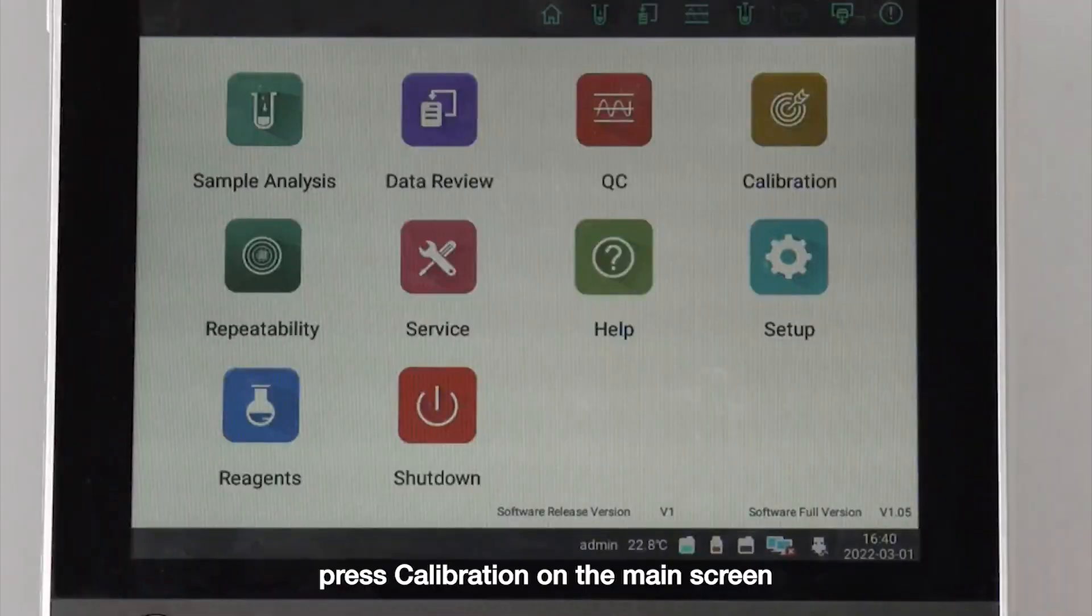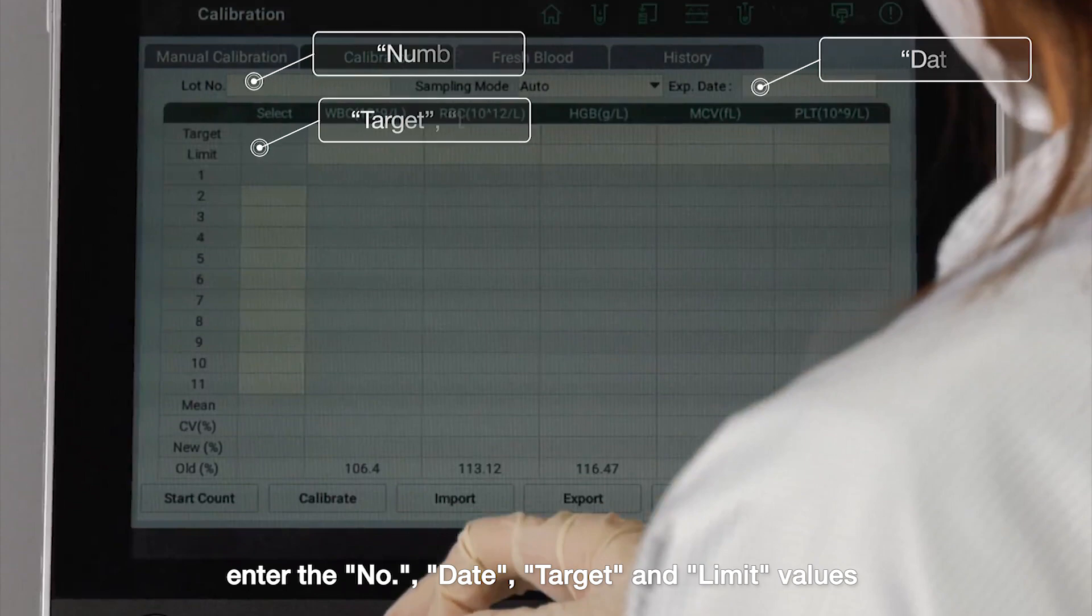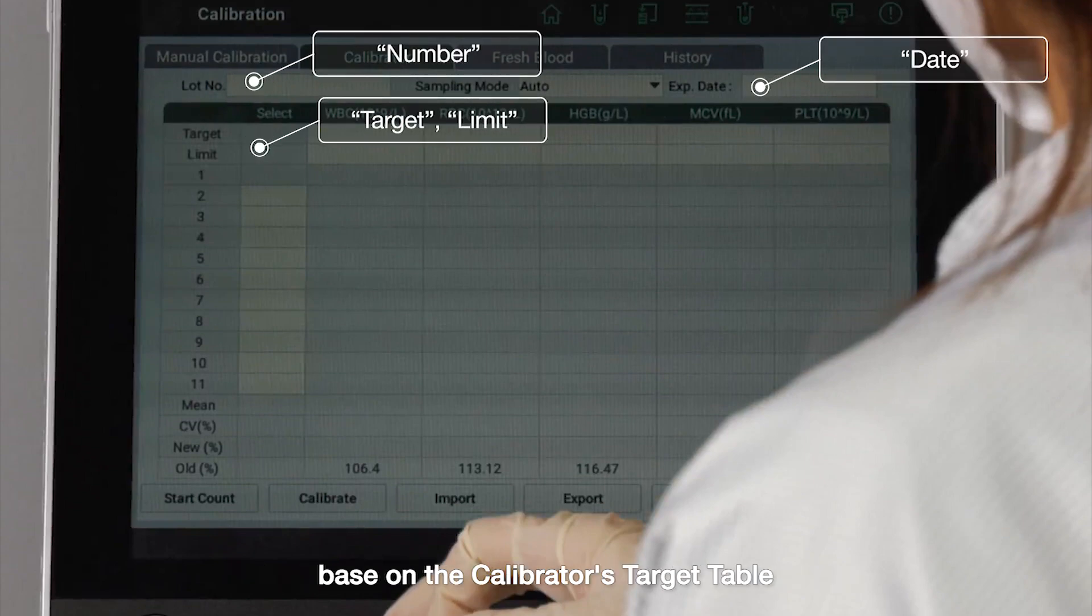Press calibration on the main screen and switch to calibrator. Enter the number, date, target and limit values based on the calibrator's target table.